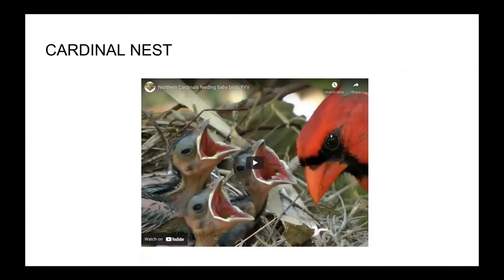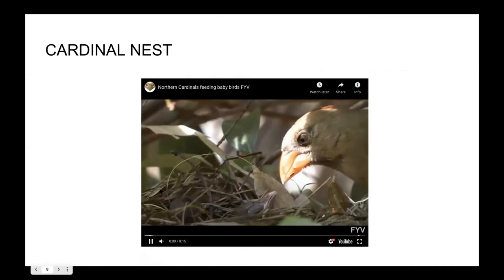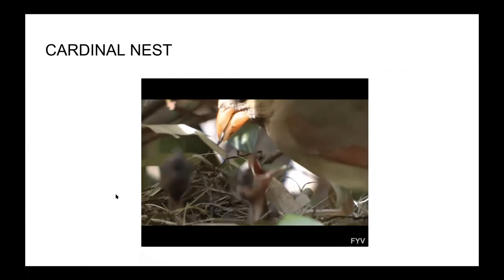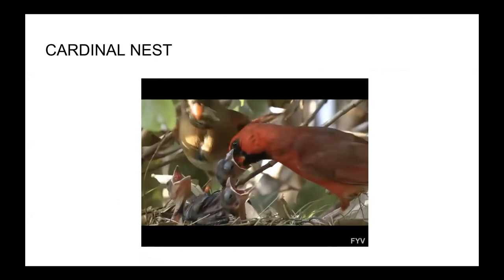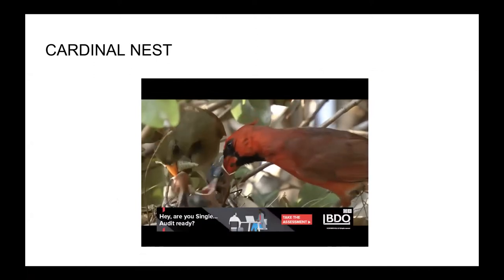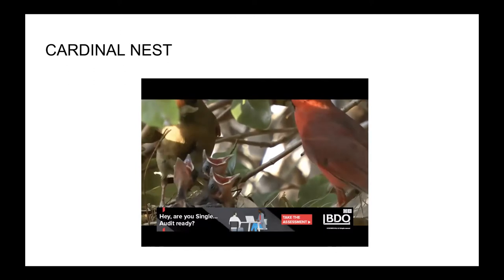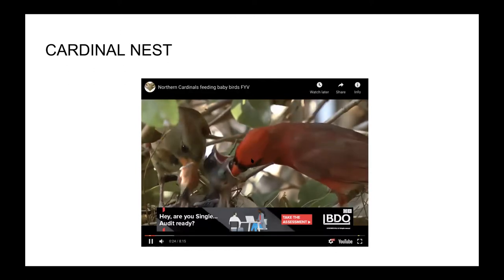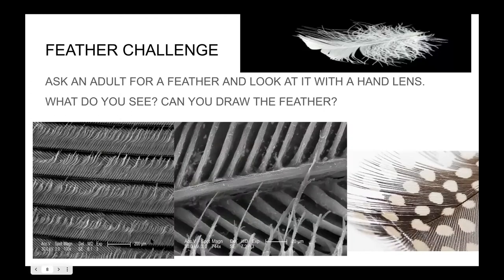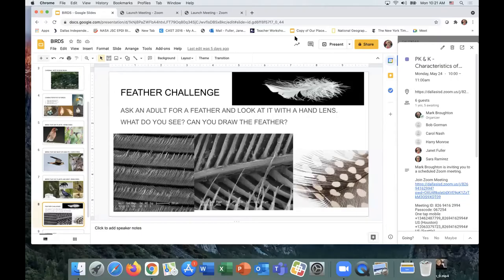Here is a cardinal nest — the daddy is the red one and the mama is the tan one. When they bring food, the babies open their mouths as wide as they can. Here is a feather challenge for you: ask an adult for a feather and look at it with a hand lens. What do you see? Can you draw the feather and show it to your teacher? I'm going to turn this over to Dr. Gorman — if you have any bird questions, he'll be glad to answer them. Have a delightful week, bye-bye.